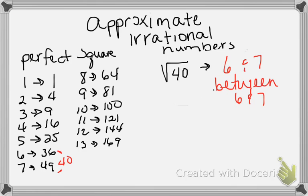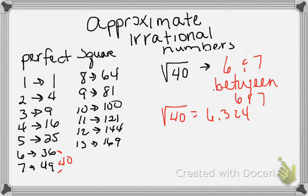We can verify this with a graphing calculator. If you put the square root of 40 in, it gives you 6.3245... and it goes on and on — confirming it's an irrational number. If we approximate it, we say it's between 6 and 7, and as I predicted, it's lower than 6.5 — we can see it's 6.3.